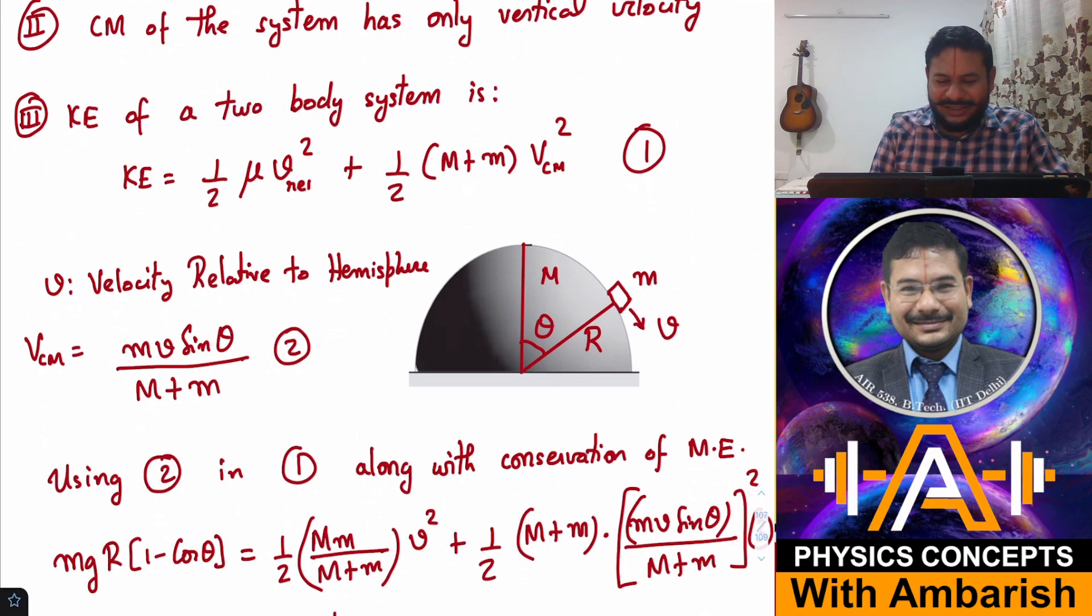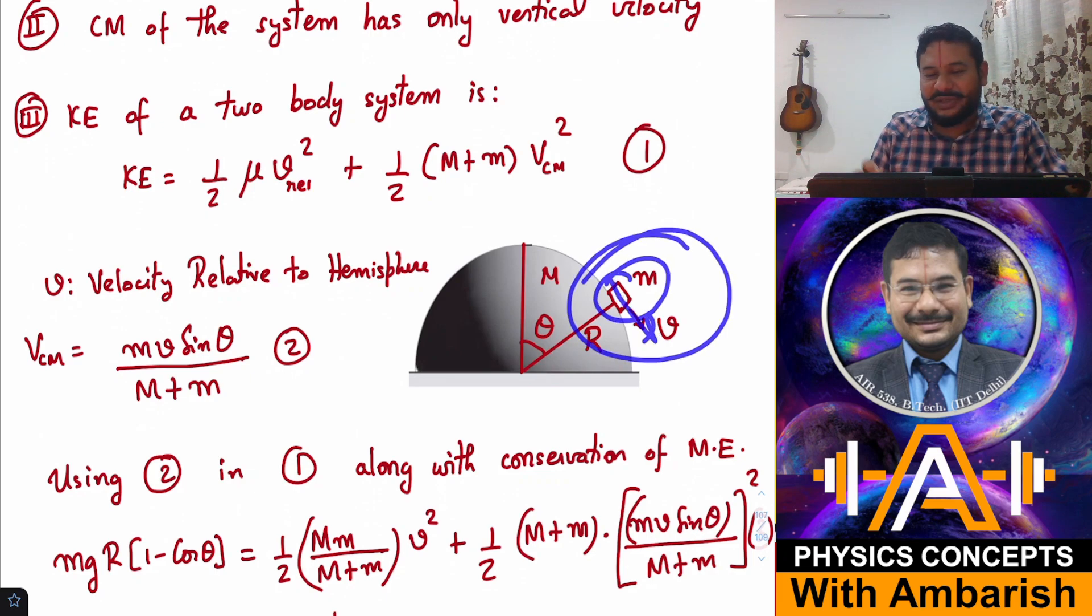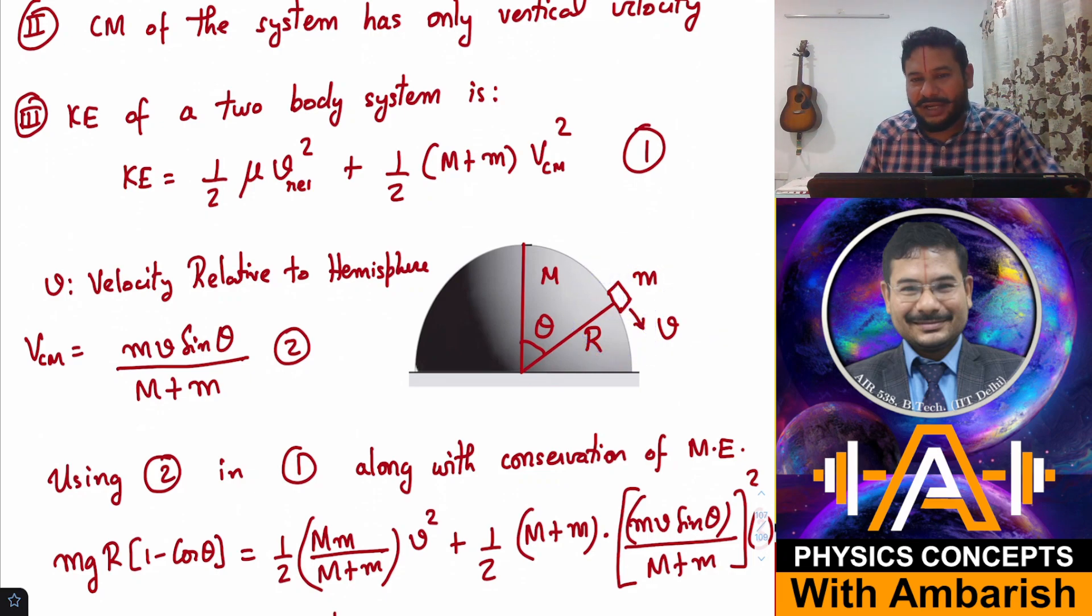What I'll use is the fact that kinetic energy of a two body system is KE equals half mu v_rel squared plus half (M+m) V_CM squared. V_rel is the velocity of the two bodies relative to each other. This is the kinetic energy as seen from the CM frame, and this is the kinetic energy of the CM. Instead of assuming V1 and V2 as velocities of the block and hemisphere, I am just assuming one variable: the velocity of m relative to the hemisphere at the time of leaving contact.